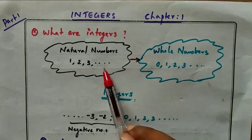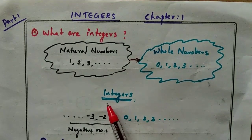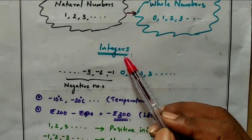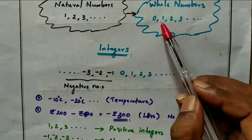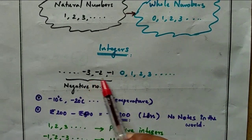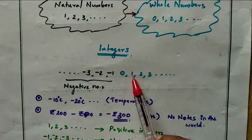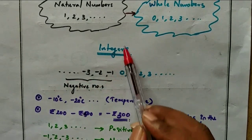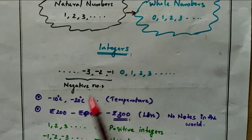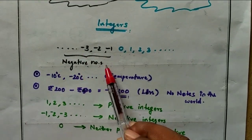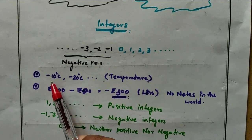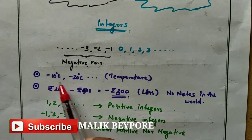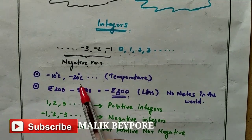So those are two number systems. Now we start a new number system called integers. What are integers? We include negative numbers with the whole numbers — that gives us integers: 0, 1, 2, 3, etc., and minus 1, minus 2, minus 3, etc. You already know the concept of negative numbers from temperature — for example, minus 10 degrees or minus 20 degrees.